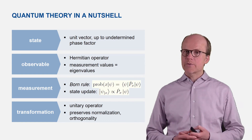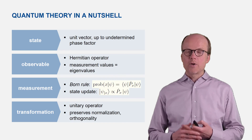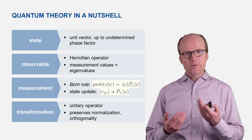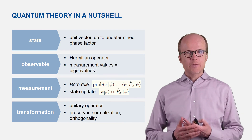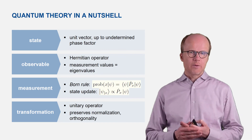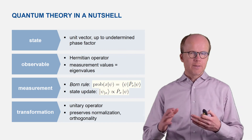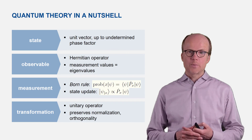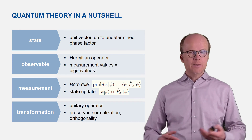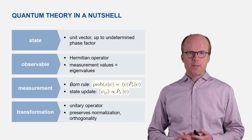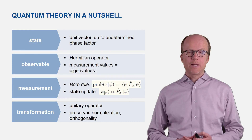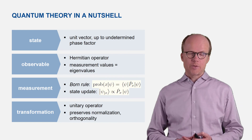Unitary transformations also preserve orthogonality: if you have two vectors which were initially orthogonal and you transform them, afterwards they are still orthogonal. This is, in a nutshell, what we will need in the coming lectures.